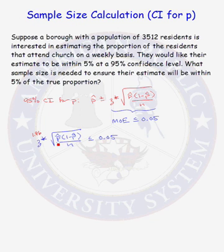Do we know P hat? P hat is the sample proportion that we would get after taking a random sample of size N from the population and calculating the sample proportion. We don't know what that sample proportion will be, so how do we continue?